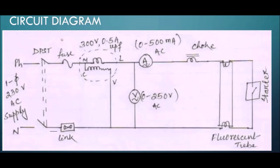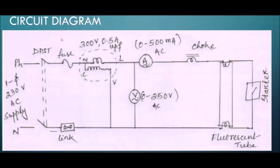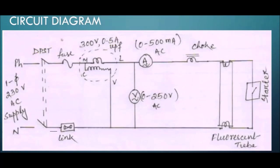To do that experiment, what we need: DPST stands for double pole single throw. This is a DPST switch — double pole single throw — that means when you switch on a single switch, with just a single throw, both poles, phase and neutral, are getting connected.